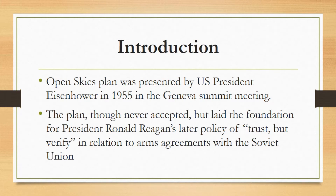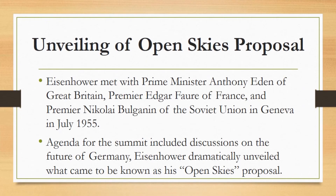Eisenhower met with Prime Minister Anthony Eden of Great Britain, Premier Edgar Faure of France, and Premier Nikolai Bulganin of the Soviet Union in Geneva in July 1955. The agenda for the summit included discussions on the future of Germany and arms control. As it became clear that no consensus could be reached on the issue of possible German reunification or the precise configuration of an arms control agreement, Eisenhower dramatically unveiled what came to be known as his Open Skies Proposal.